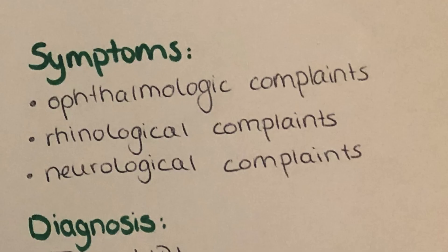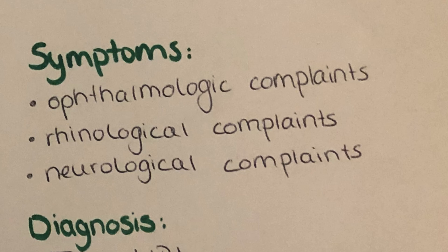Symptoms are generally categorized as ophthalmologic, rhinological, and neurological complaints. These can include diplopia, rhinorrhea, headache, snoring, sleep apnea, and pressure felt behind the face, in the forehead, or next to the nose where the sinuses are located. Diagnosis of mucocele and pyocele is made by CT or MRI. CT is usually preferred because it also shows the condition of the bony structures, since the sinuses expand due to mucus filling and the bones may thin out.